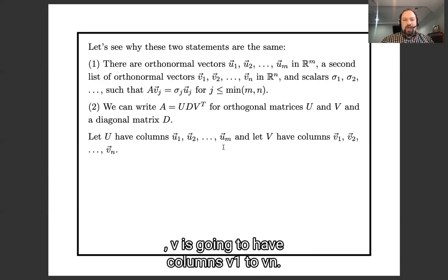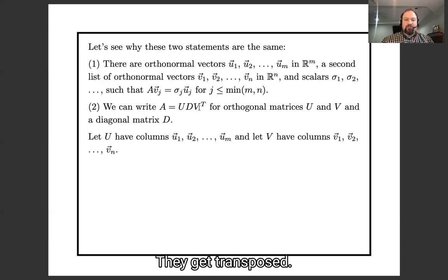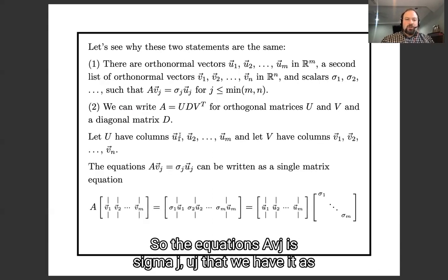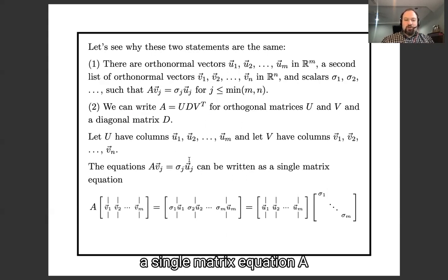Well, U is going to have columns u1 through um. V is going to have columns v1 through vn, but then they get transposed, so they'll be rows over here. So the equations Avj = σjuj, that can be written as a single matrix equation.